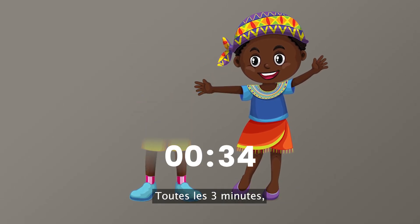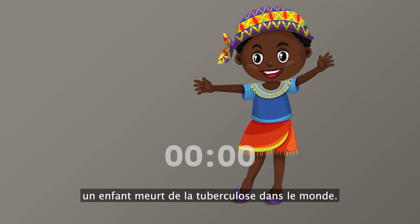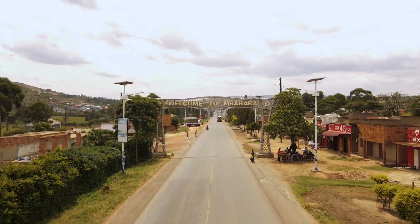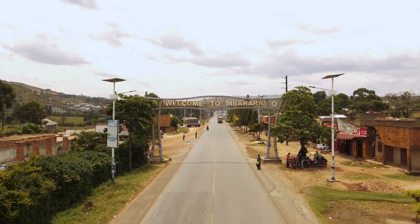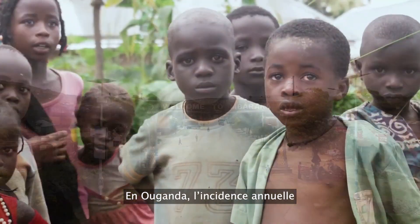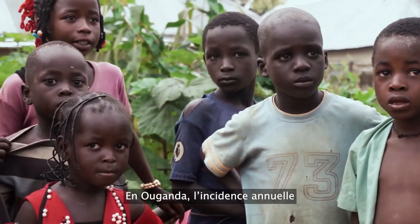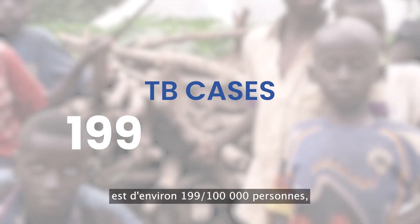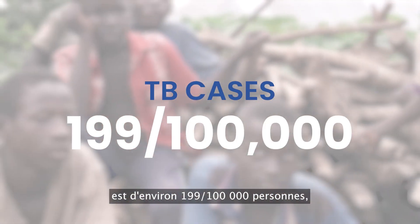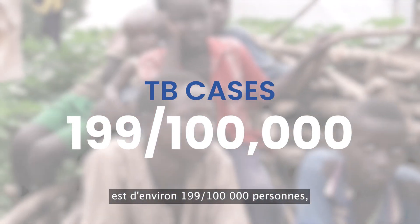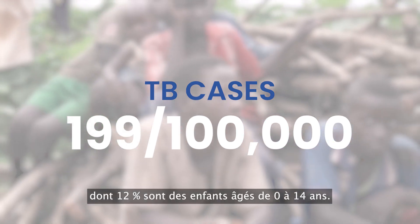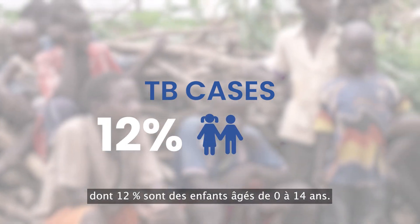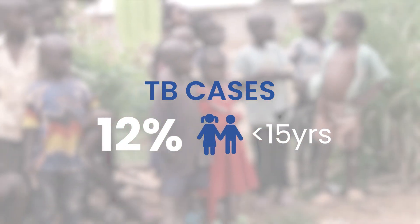Worldwide, every three minutes, one child dies of TB. In Uganda, our incident cases annually is about 199 out of 100,000 individuals, and of these, 12% are children who are between the ages of 0 to 14 years.